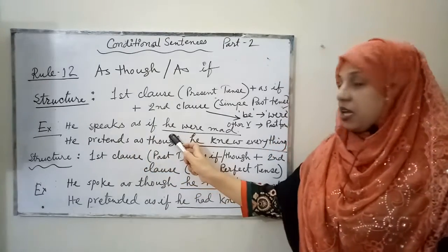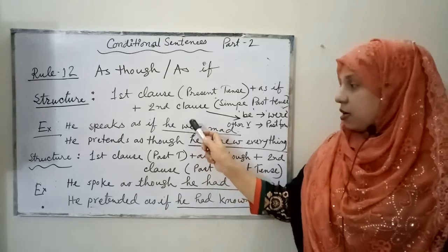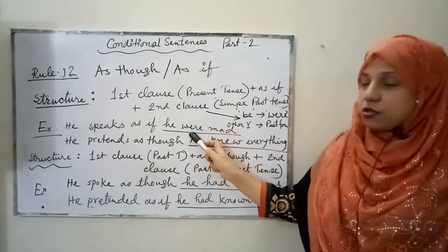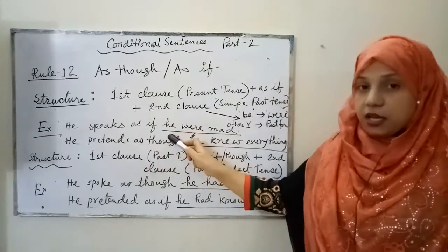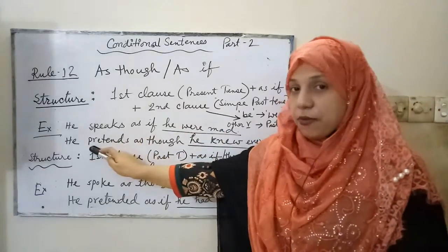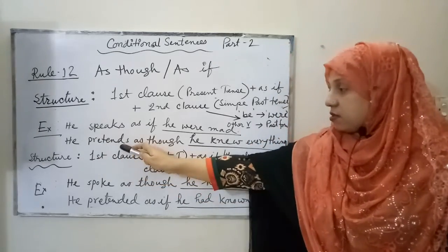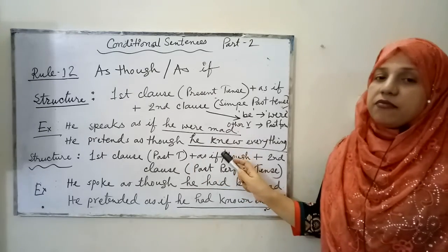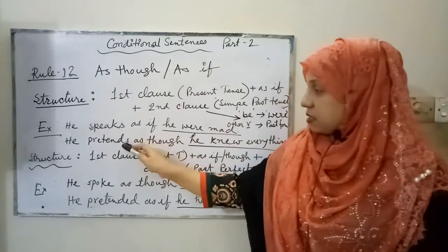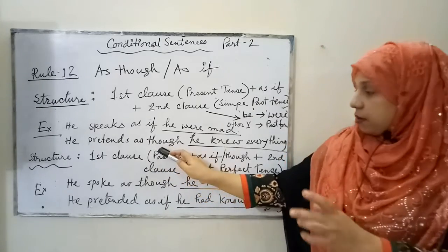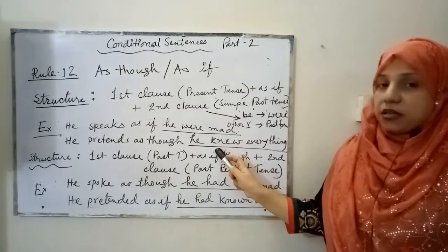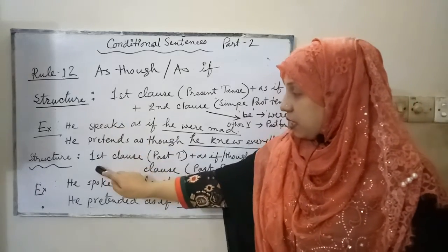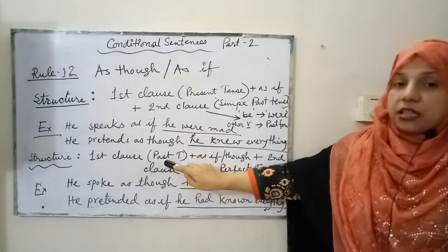For example: 'He speaks as though he were mad' — the first clause is present tense, so we use the past form, and for the be-verb we use 'were' not 'was.' Another example: 'He pretends as if he knew everything' — 'know' is not a be-verb, so we use its simple past form 'knew.' The first clause 'he pretends' is present tense, so the second clause must be in simple past tense.